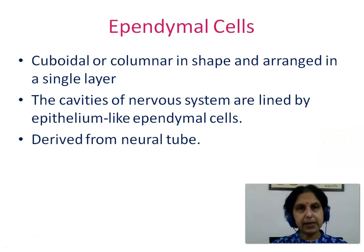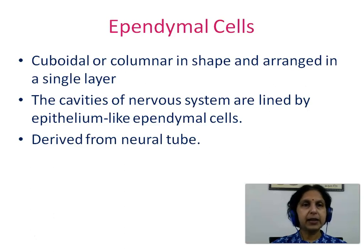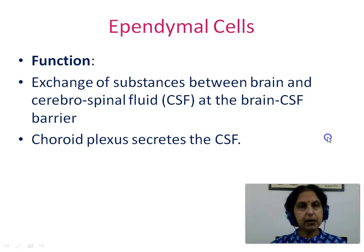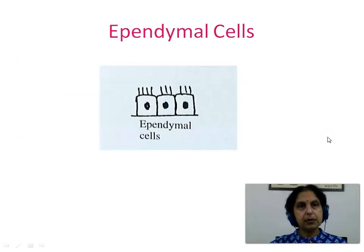Ependymal cells are cuboidal or columnar in shape and arranged in a single layer. The cavities of the nervous system — the ventricles — are lined by epithelium-like ependymal cells, and these are derived from the neural tube. Their functions include exchange of substances between brain and cerebrospinal fluid at the brain-CSF barrier, and the choroid plexus secretes the CSF. This picture shows the structure of ependymal cells.